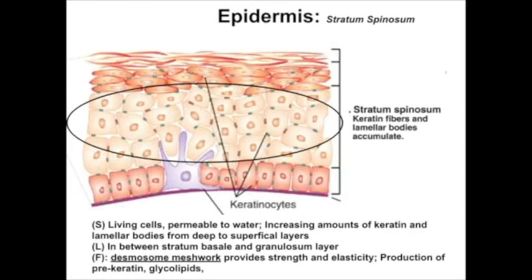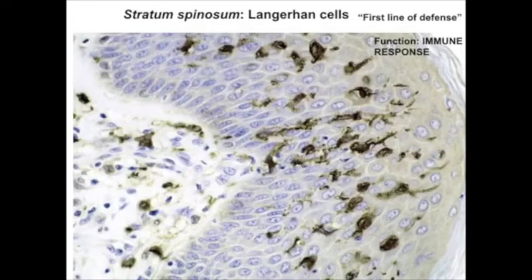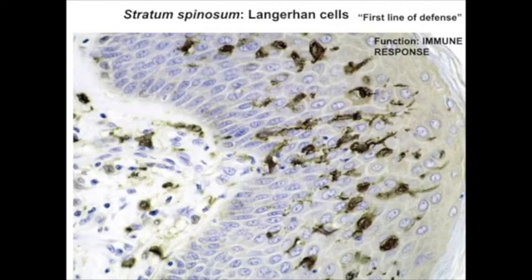Moving deeper, we get to a thicker layer of cells that are still alive and have interstitial fluid between the cells, but are building up more keratin and lipid bodies. Besides the keratinocytes, there are also immune cells called Langerhans cells. There are hundreds of these within every square inch of your skin, slowly moving around and sending out their processes, protecting against invaders and alerting the immune system if anything breaches that epithelial boundary.